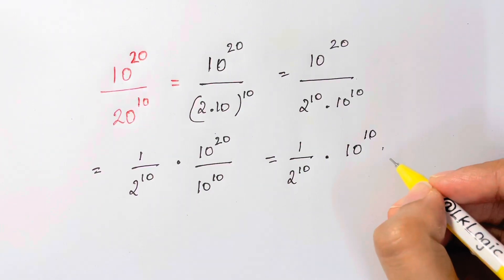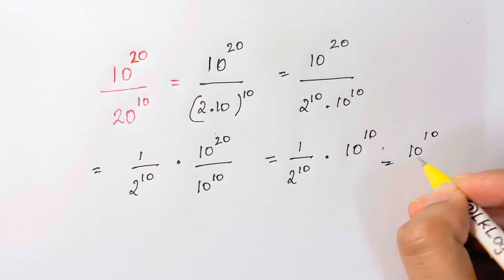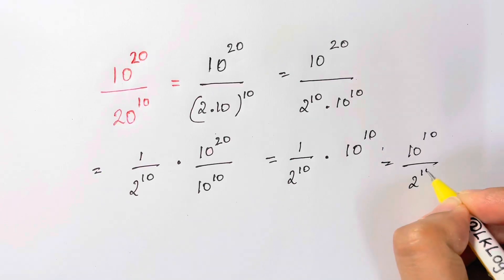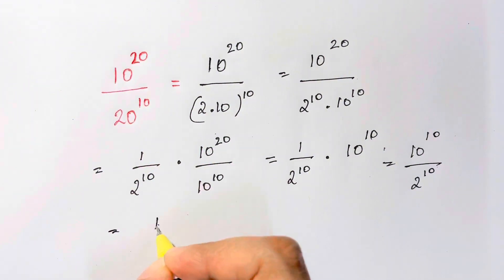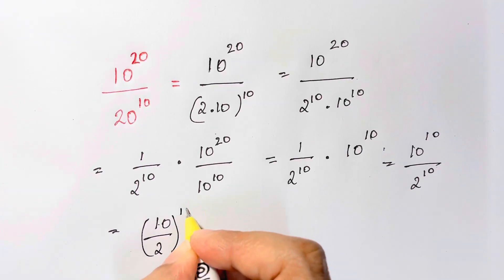Now what do I have here, 10 to the power of 10 over 2 to the power of 10. Now you can see, there are same exponents but bases are not same. So what I can do is, you can write it like this, 10 over 2 whole to the power of 10.